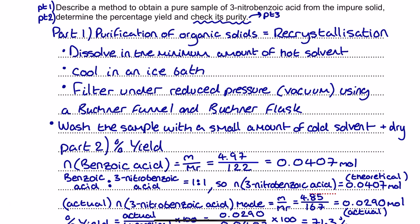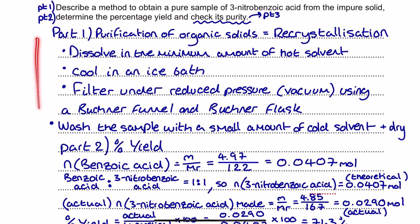For part one, purification of organic solids by recrystallization: dissolve the substance — our organic solid — in the minimum amount of hot solvent. Then cool the mixture in an ice bath. Then filter under reduced pressure, which is with a vacuum, using a Buchner funnel and a Buchner flask — be specific with your kit. Then wash the sample with a small amount of cold solvent and leave it to dry. Make sure all of these stages are mentioned.